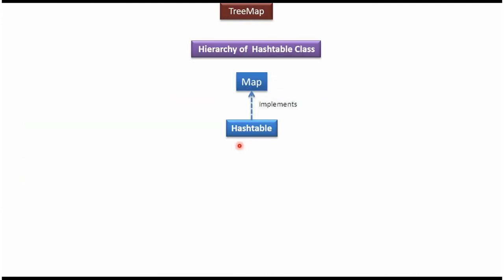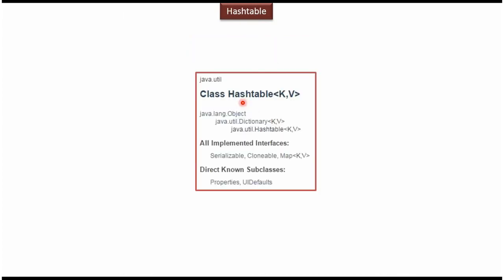Here you can see the hierarchy of hash table class. Hash table class implements map interface and belongs to the java.util package. Here K and V represent the type of keys and the type of values which we are planning to maintain in the hash table.